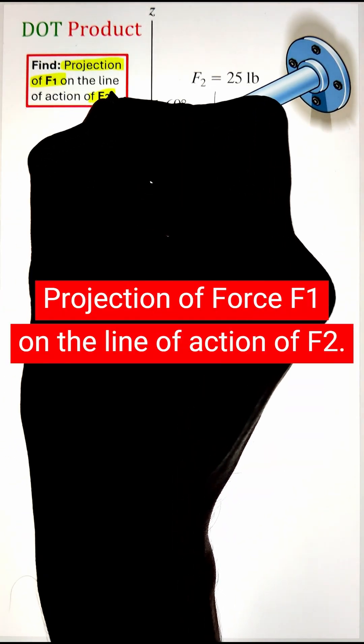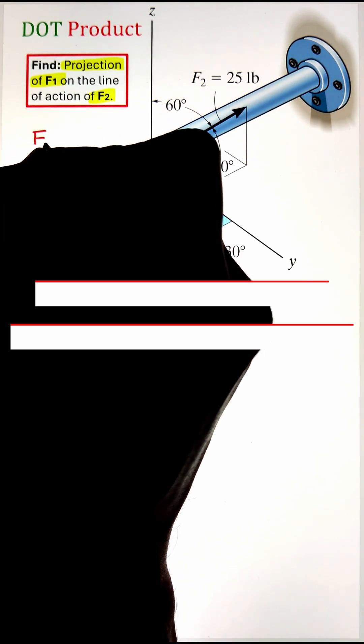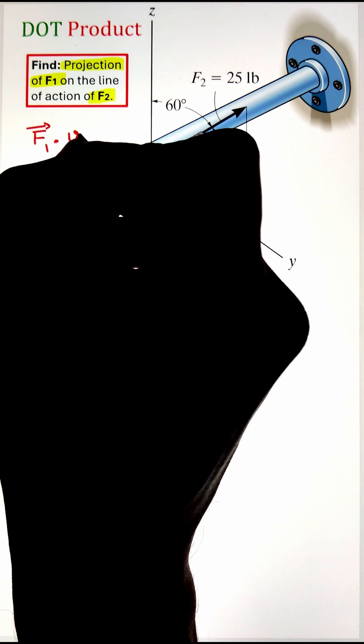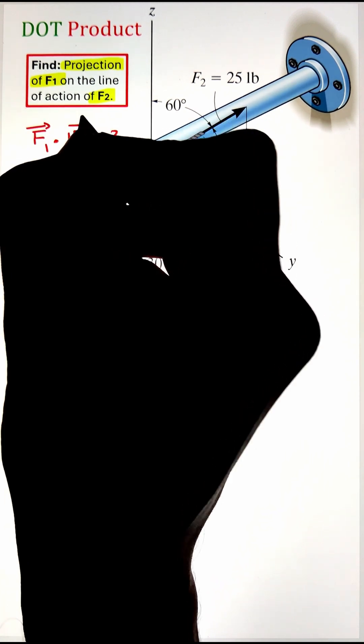In order to find the projection of force F1 on the line of action of F2, we can utilize the dot product between the force vector F1 with the unit vector of F2.